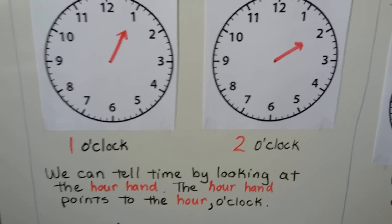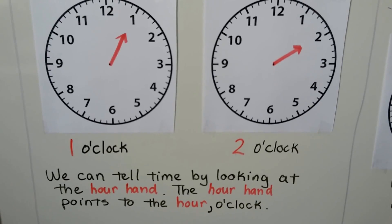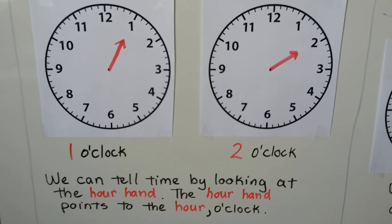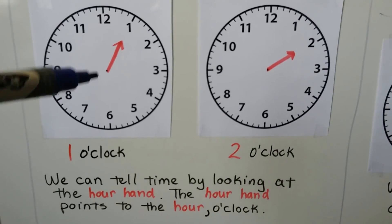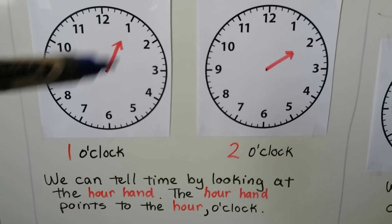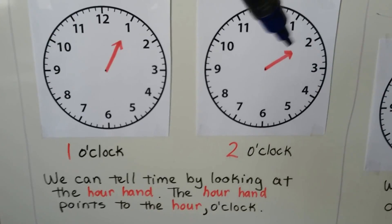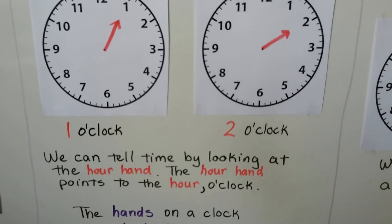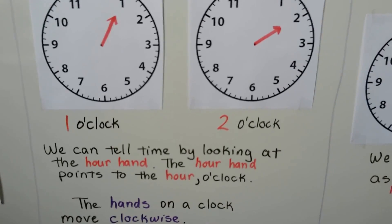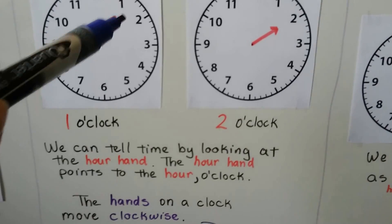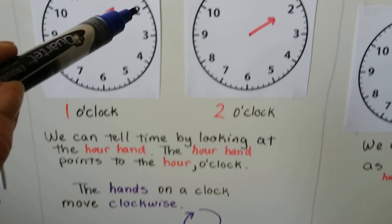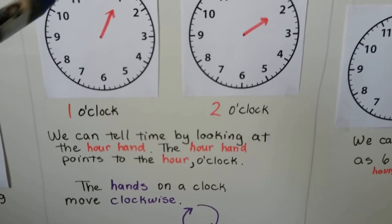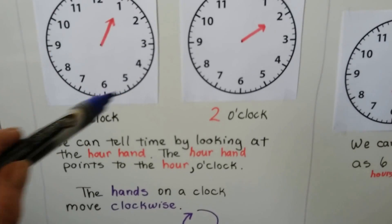We can tell time by looking at the hour hand. The hour hand points to the hour o'clock — one o'clock, two o'clock. And the hands on the clock move clockwise; they go around in this direction. That's called clockwise.